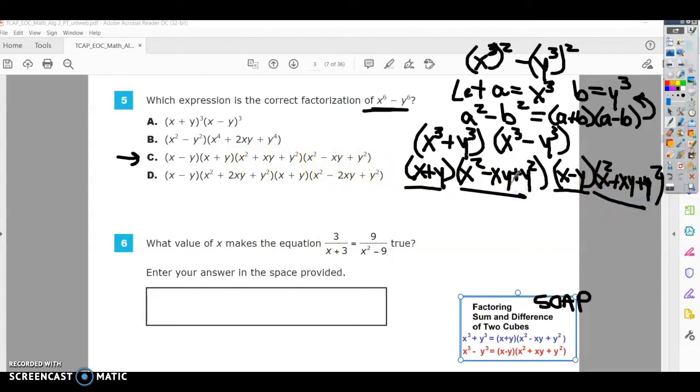So again, we had to substitute a different variable in with lower powers using our properties of exponents that we rewrote. And then you have to substitute the original variables back in. And then use your sum and difference of cubes to factor that. So the correct answer here would be C.